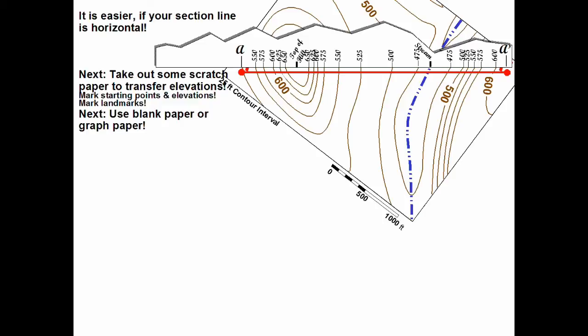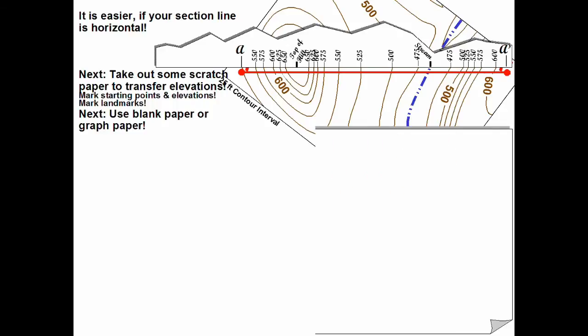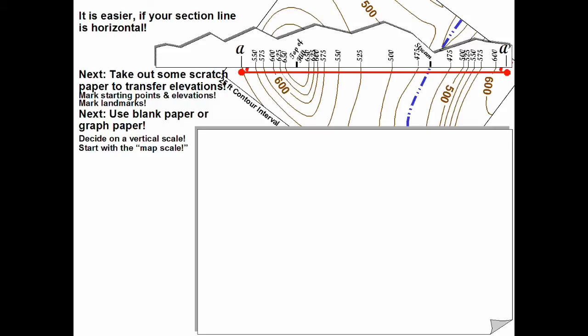Well now we need a blank piece of paper or better yet a graph paper. Graph paper has the advantage that we can transfer our elevation lines much much easier. Okay here's my piece of paper. Now what is next?